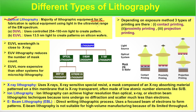We use optical lithography. The majority of lithographic equipment for IC fabrication is optical equipment using light in the ultraviolet range of the EM spectrum. There are two different wavelengths used: DUV uses 254 to 193 nanometer light to create patterns, and EUV uses 13.9 nanometer light to create patterns on silicon wafers — so EUV wavelength is close to X-ray. EUV lithography reduces the number of mask counts. Since EUV lithography tools were not available, industry moved to multiple patterning, which requires more masks and steps.